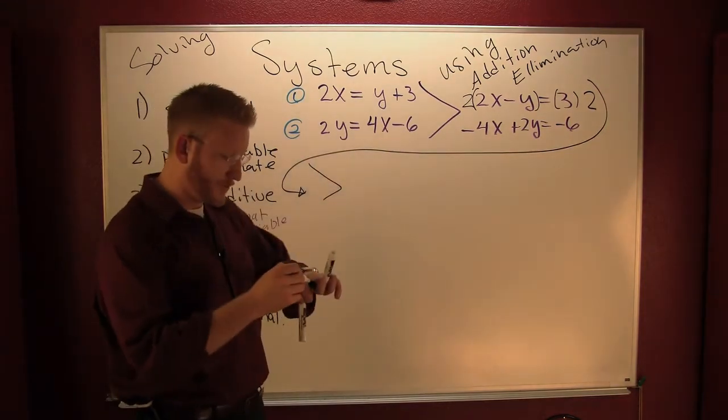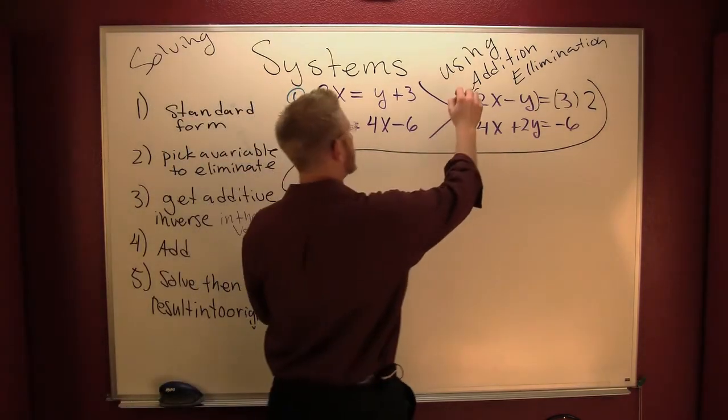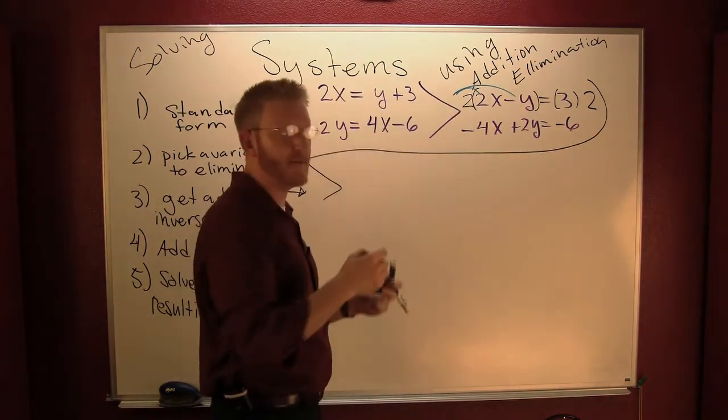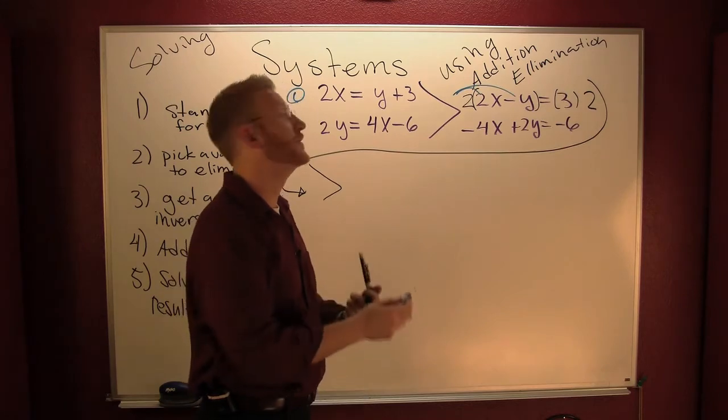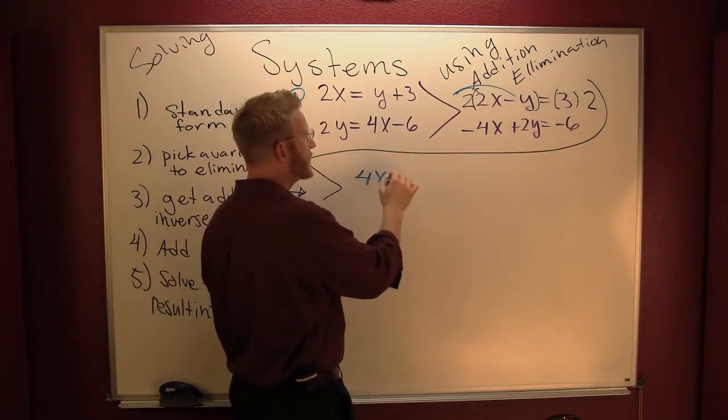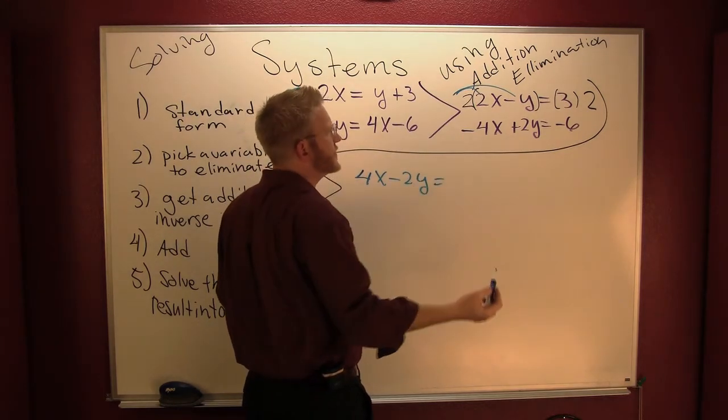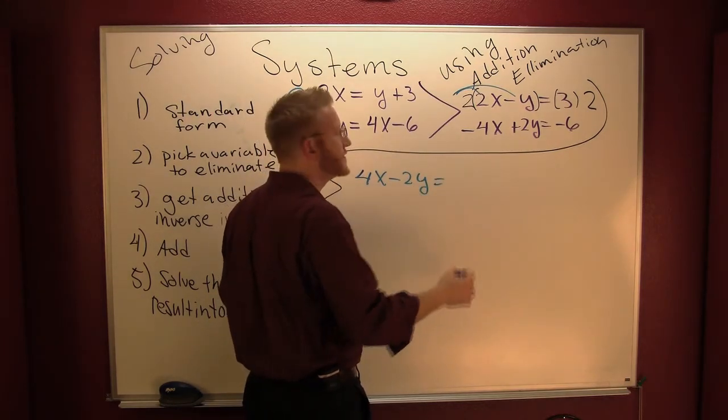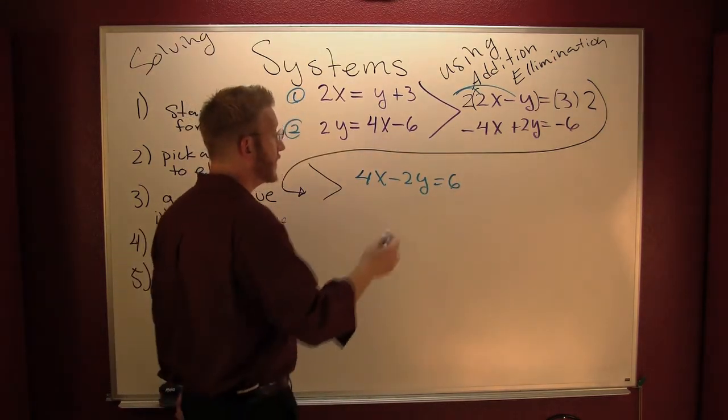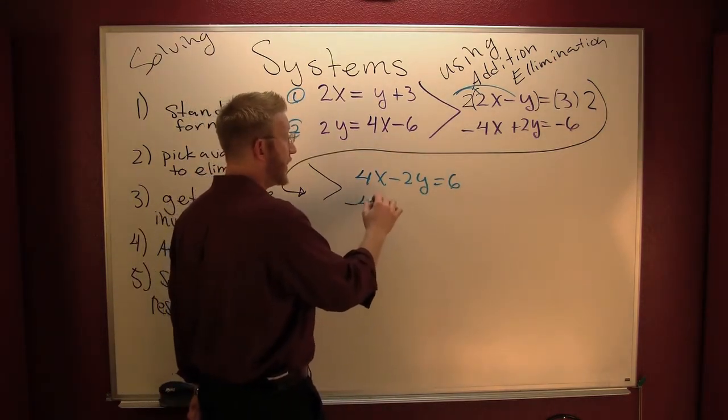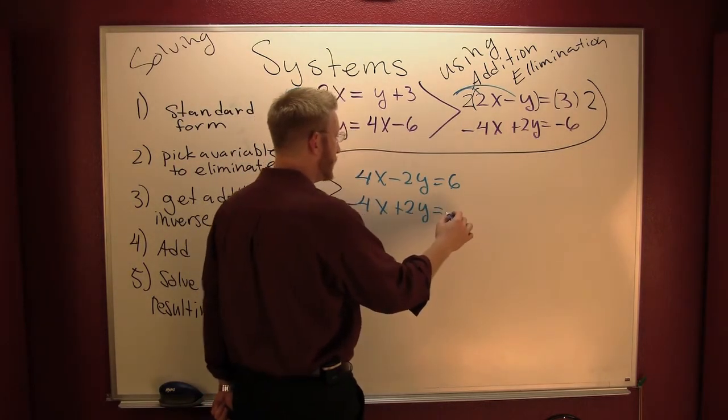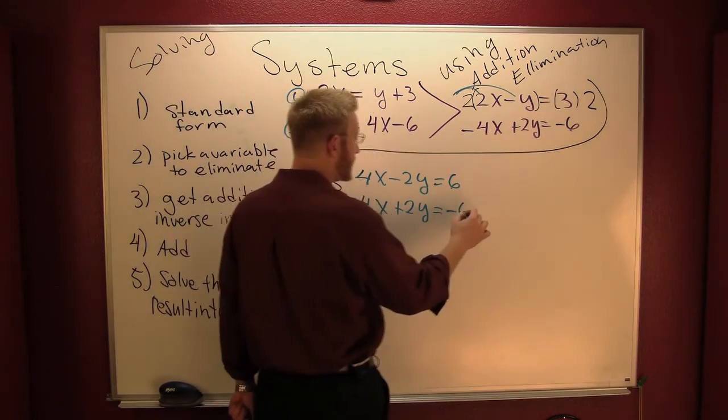This is 4x - 2y, and on the right, what's 3 times 2? 6. Very nice. That was thing one. Let me recopy thing two: -4x + 2y = -6.